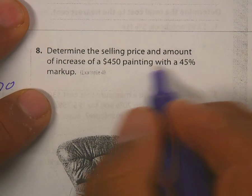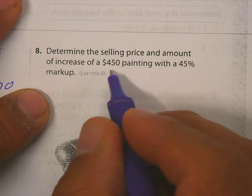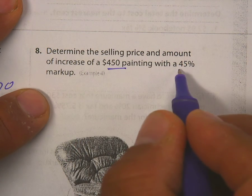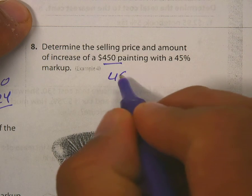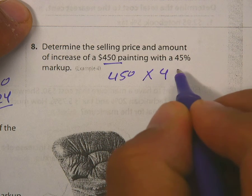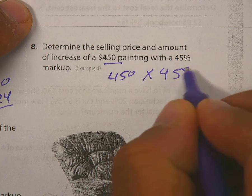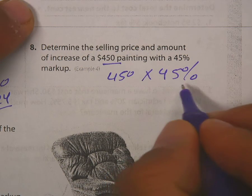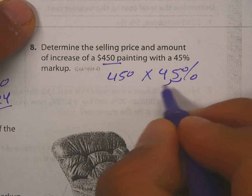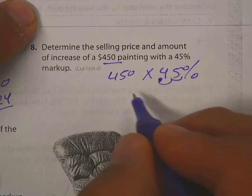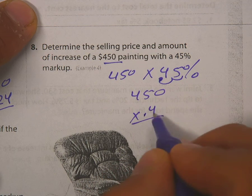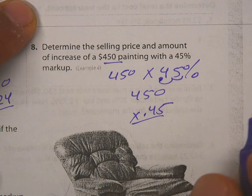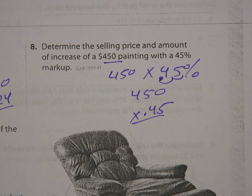Number eight: determine the selling price and amount of increase of a $450 painting with a 40% markup. Multiply 450 times 0.45 — convert 40% to a decimal by moving two places. What you get is the amount you raise your price by.